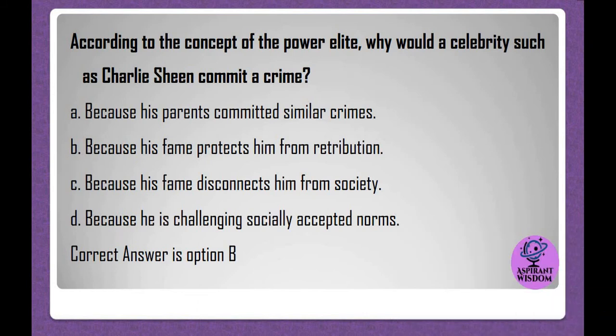According to the concept of the power elite, why would a celebrity such as Charlie Sheen commit a crime? A. Because his parents committed similar crimes. B. Because his fame protects him from retribution. C. Because his fame disconnects him from society. D. Because he is challenging socially accepted norms. Correct answer is option B.